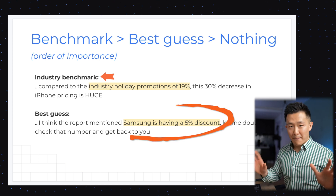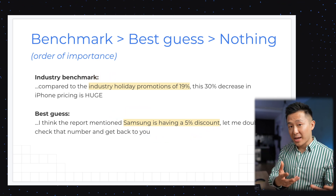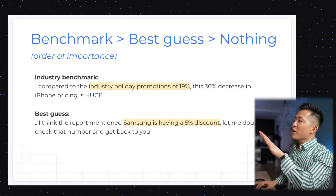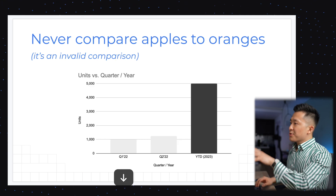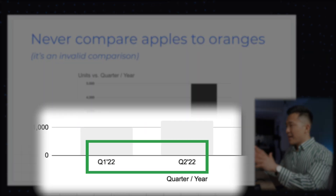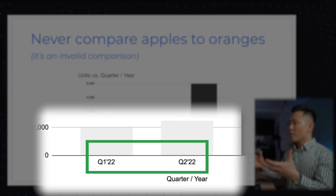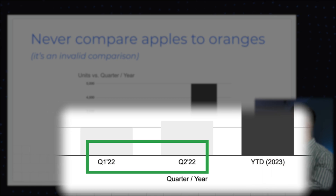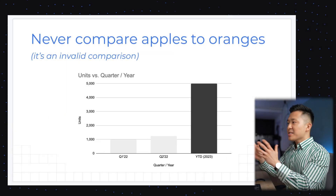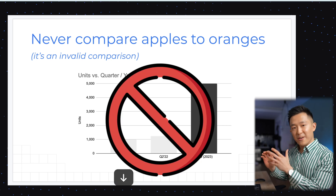Remember, any number short of making stuff up is better than nothing when presenting data. And quick tip here: never compare apples to oranges. If you have quarterly data, compare that to other quarterly data. I recently came across a report where someone compared quarterly data to YTD year-to-date numbers. This comparison cannot be valid because the timeframes are different.